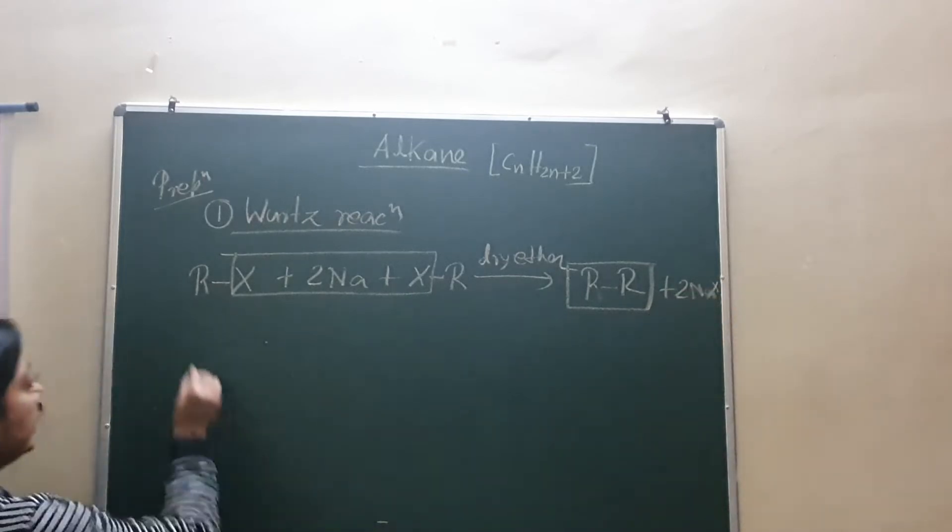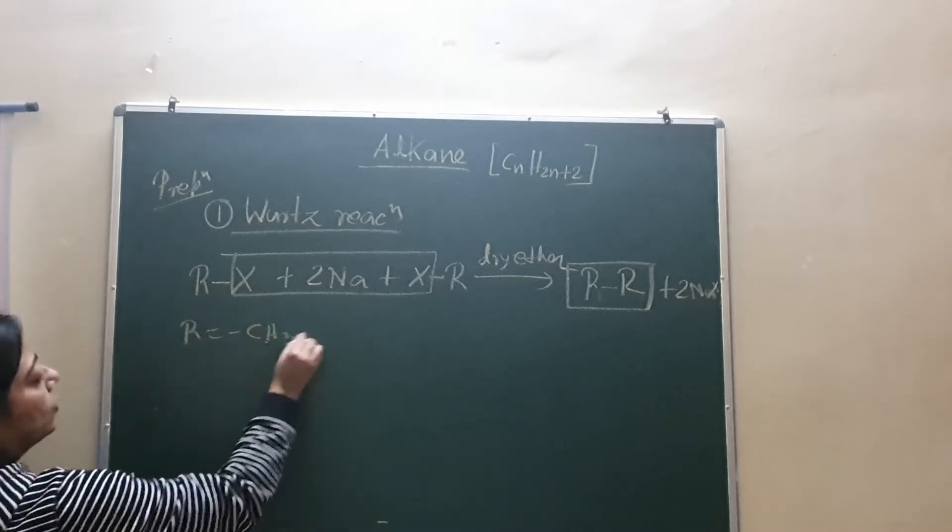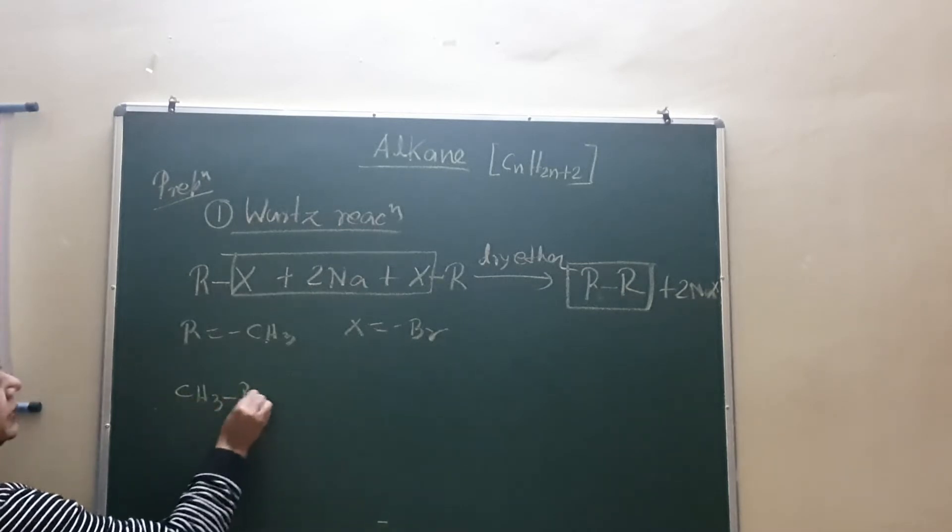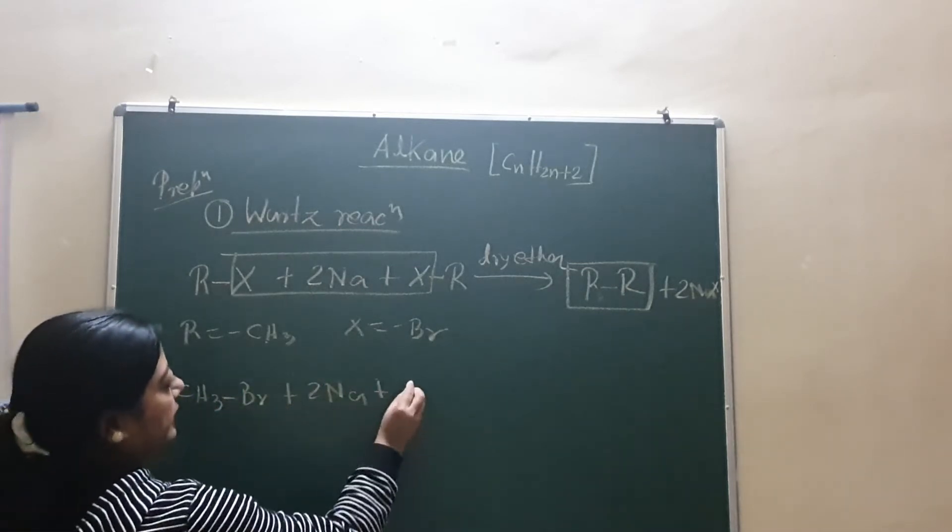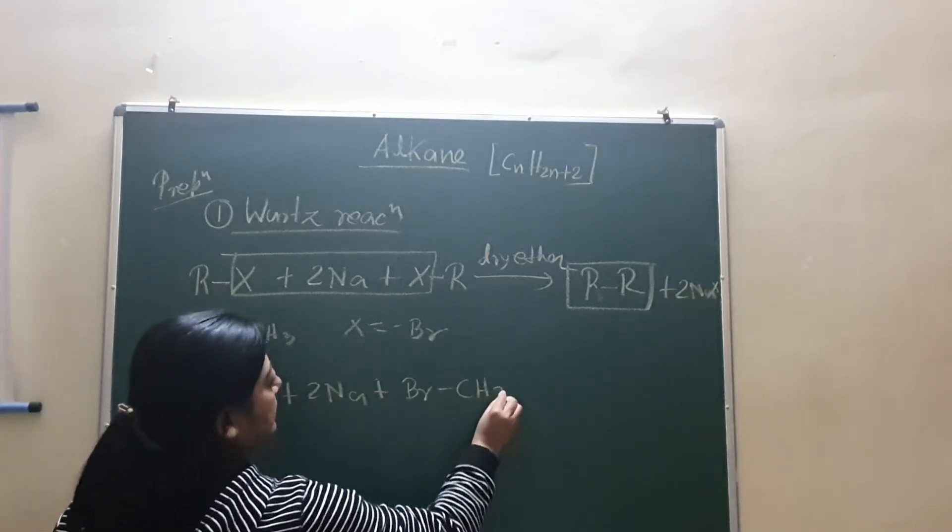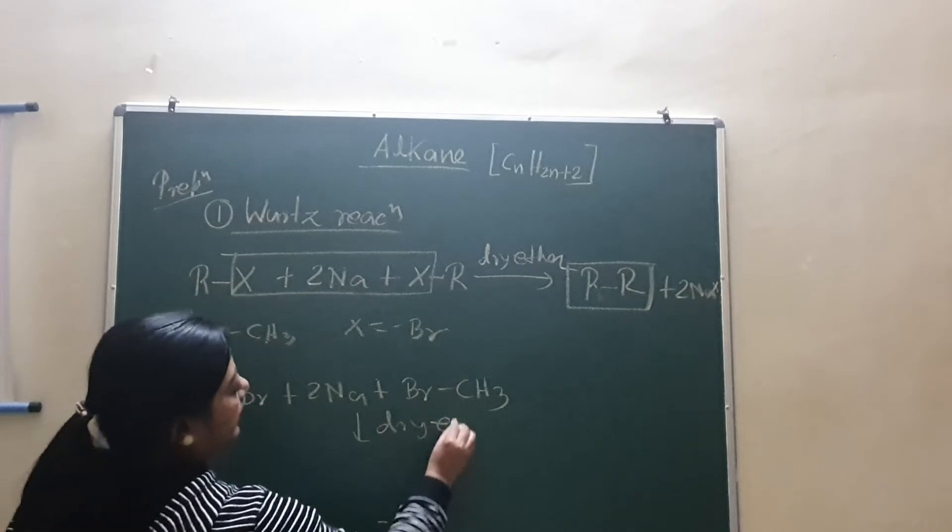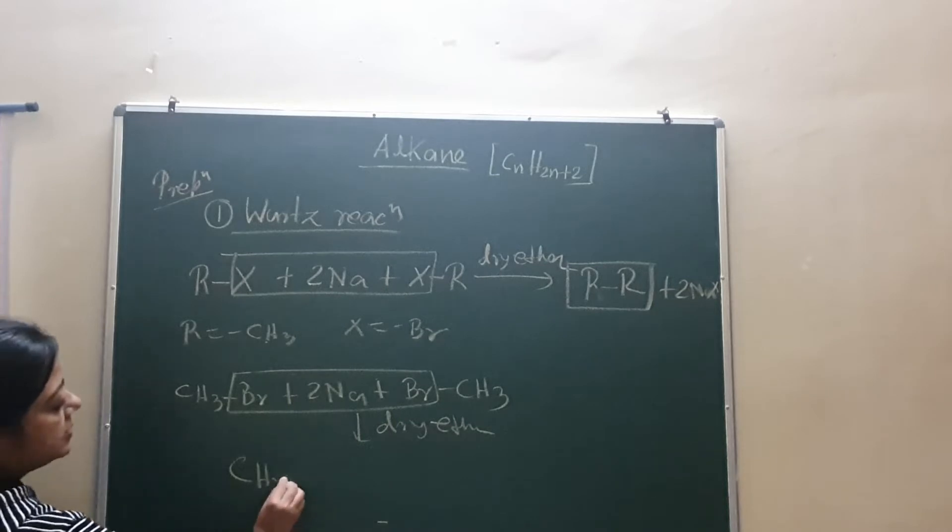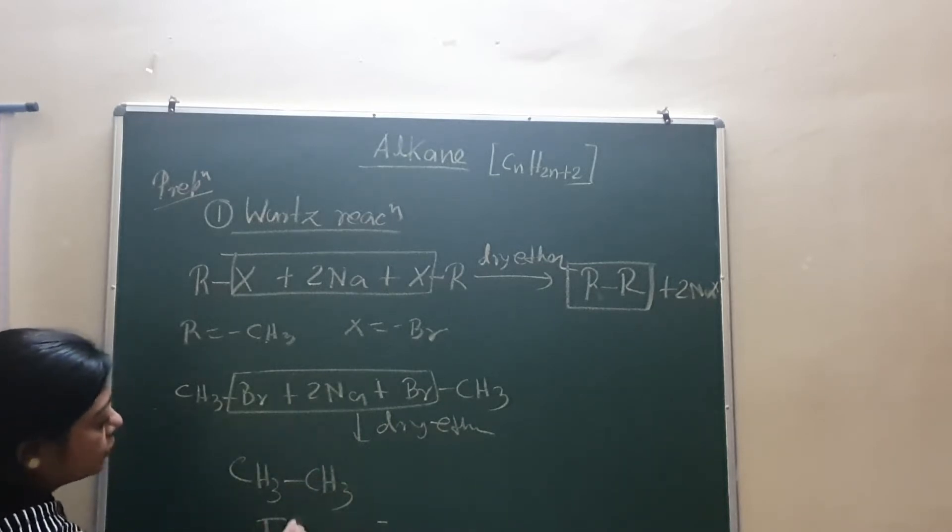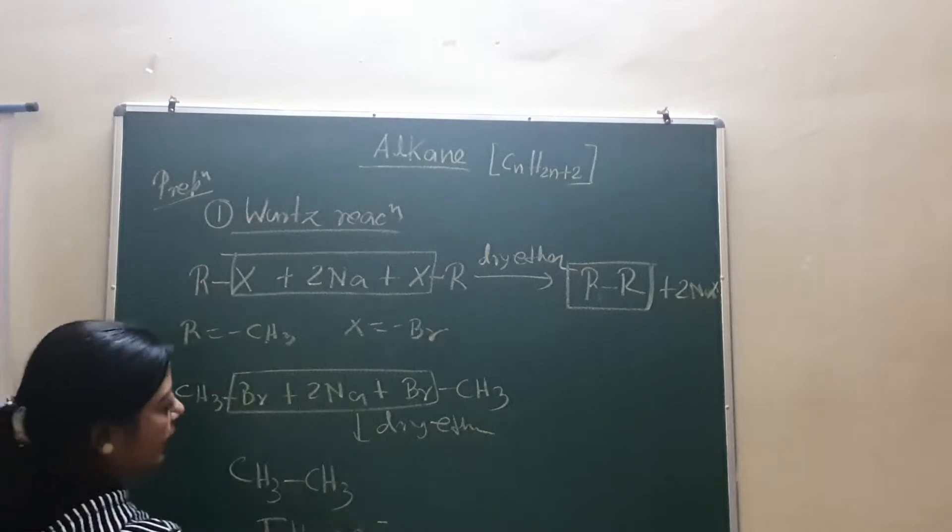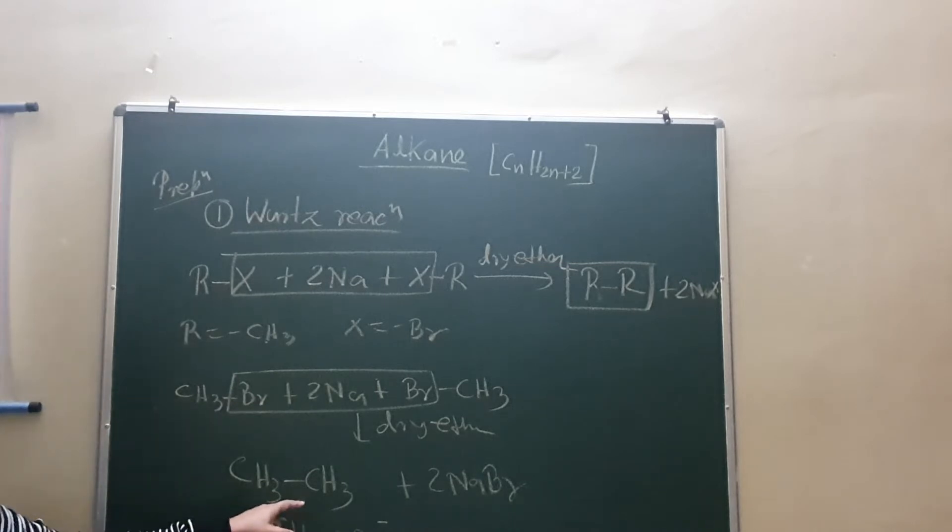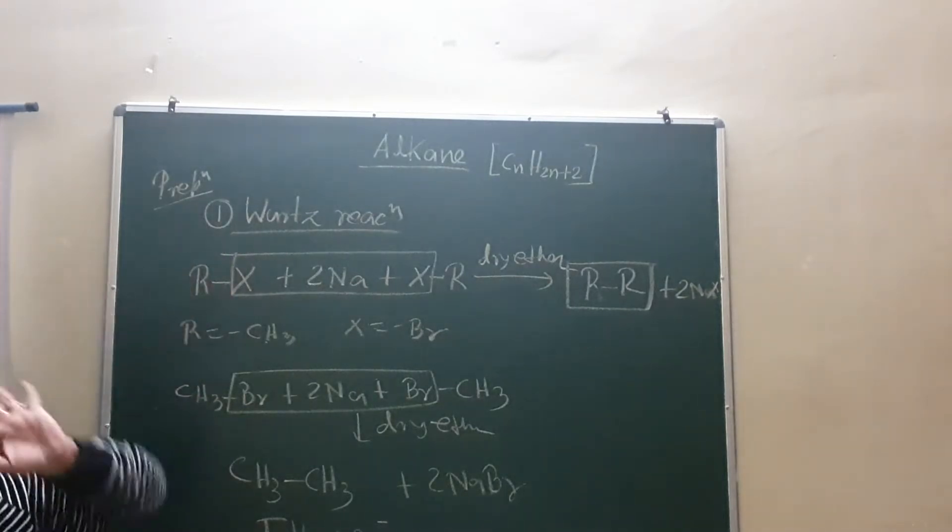Suppose R equal to CH3 and X equal to bromine. Then CH3Br plus sodium plus again one molecule of CH3Br in dry ether medium, you remove this NaBr and CH3 single bond CH3, that is your ethane. We have started with one carbon and we get double carbon. So we always get the higher alkane by this Wurtz reaction.